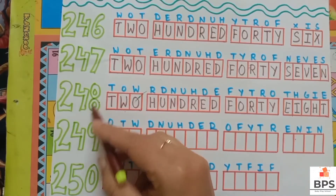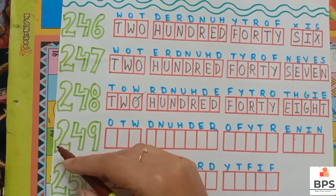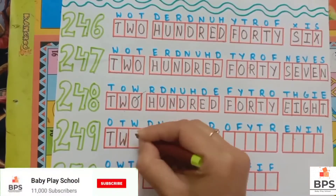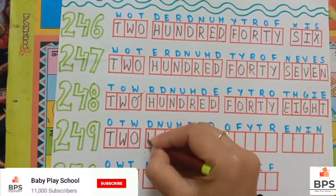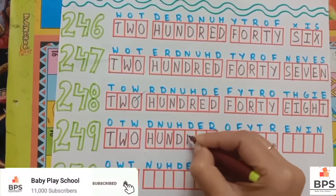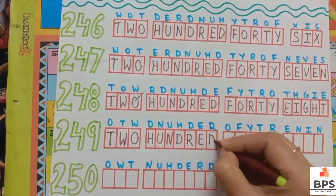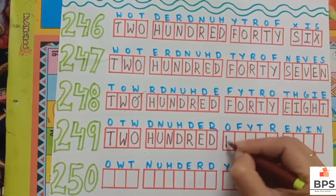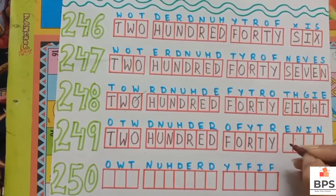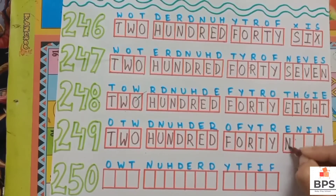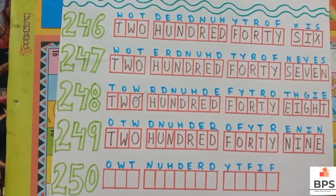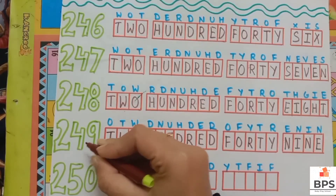Two hundred forty eight, two hundred forty nine — 249. T-W-O, 2; H-U-N-D-R-E-D, 100; F-O-R-T-Y, 40; N-I-N-E, 9. Two hundred forty nine — 249.